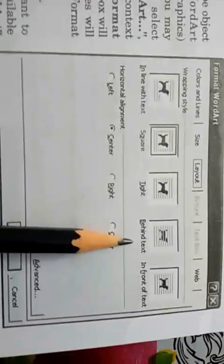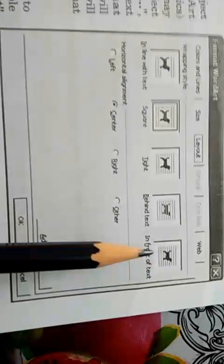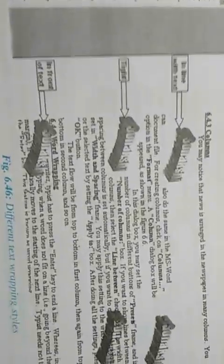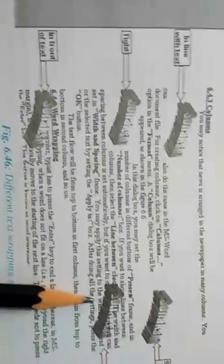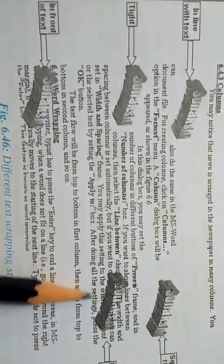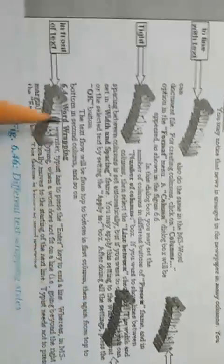You can write text on top of a picture, or place the picture on top of text. For example, Behind Text places the picture behind the text, and In Front of Text covers the text with the picture. The Square shape option leaves a blank rectangular area around the picture.